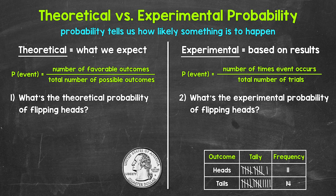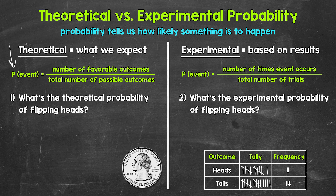Let's start with theoretical probability. Theoretical probability tells us how likely something is to happen based on the math — we use thinking and reasoning. It's basically what we expect to happen. We calculate it using this formula: P(event) equals the number of favorable outcomes over the total number of possible outcomes. That's the total number of things that can happen — the total number of possibilities.